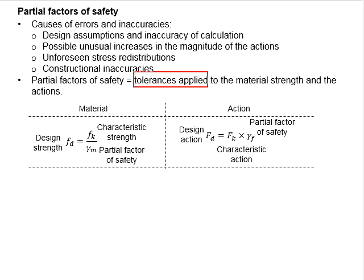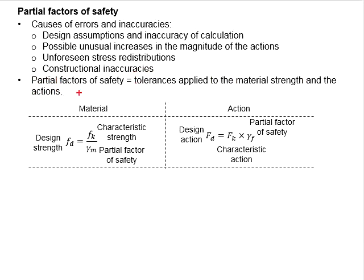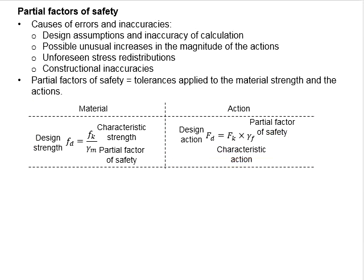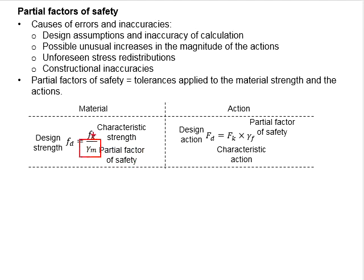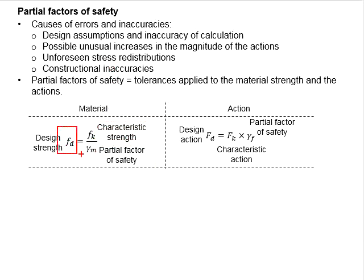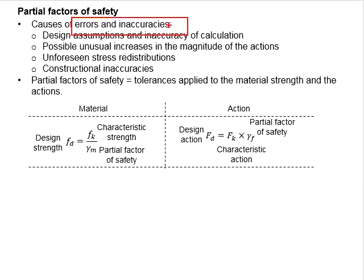Partial factors of safety are basically the tolerance applied to the material strength and also the action. There are two types of partial factors of safety — one is for the material, another one is for the actions. The partial factor of safety for the material is divided with the characteristic strength of the material, so that the design strength is always smaller than the characteristic strength, ensuring that in cases of error and inaccuracy, the characteristic strength is not exceeded.